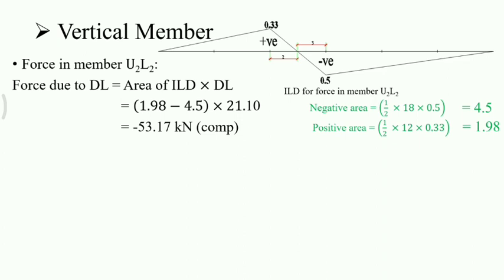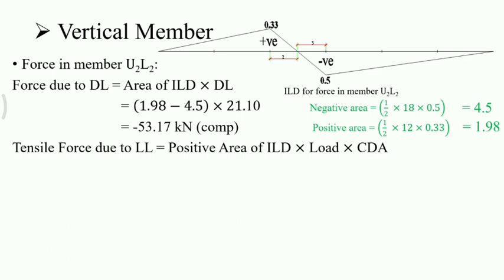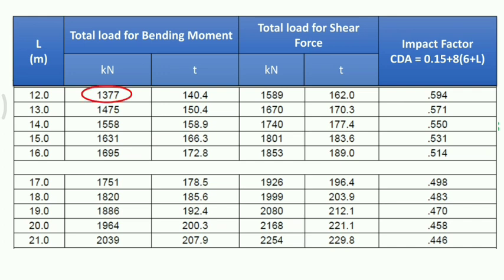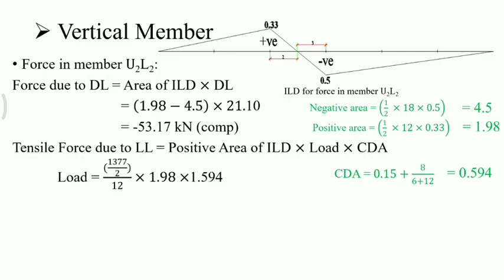Now we will get the tensile force due to live load: positive area of ILD × load × CDA. The positive area has a base length of 12 m. CDA for 12 m is 0.594. The load for 12 m from the bridge rule is 1377 kN per track. Per girder: (1377/2) ÷ 12 × 1.98 × 1.594, increasing the load by 59.4% due to impact. We get the tensile force as 181.08 kN.